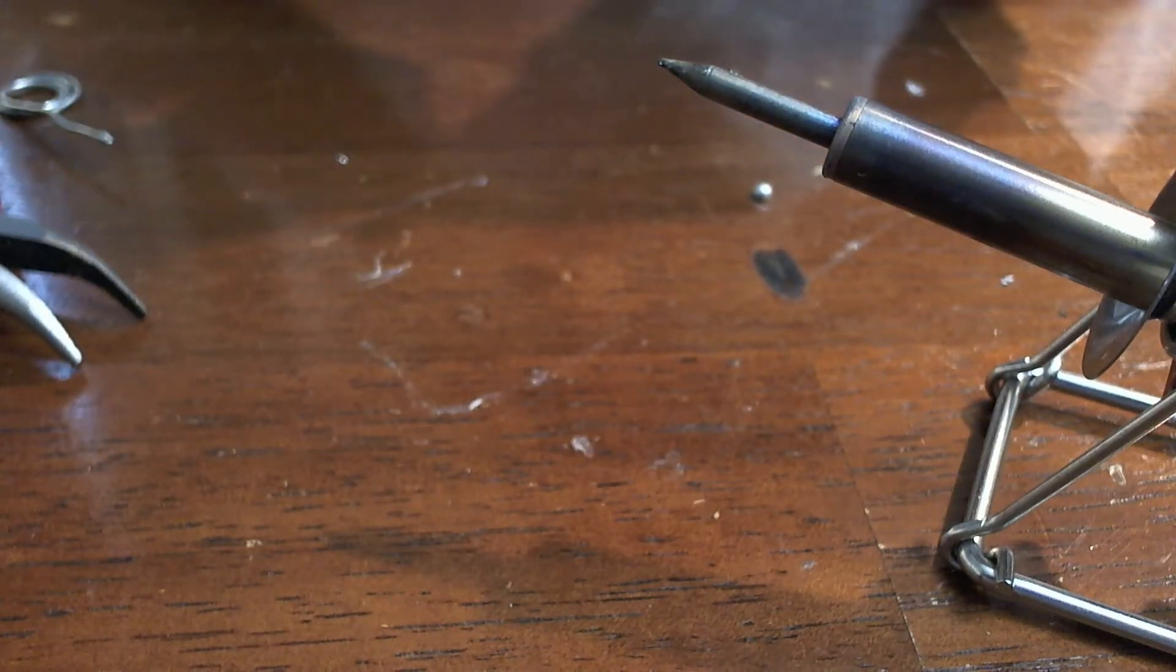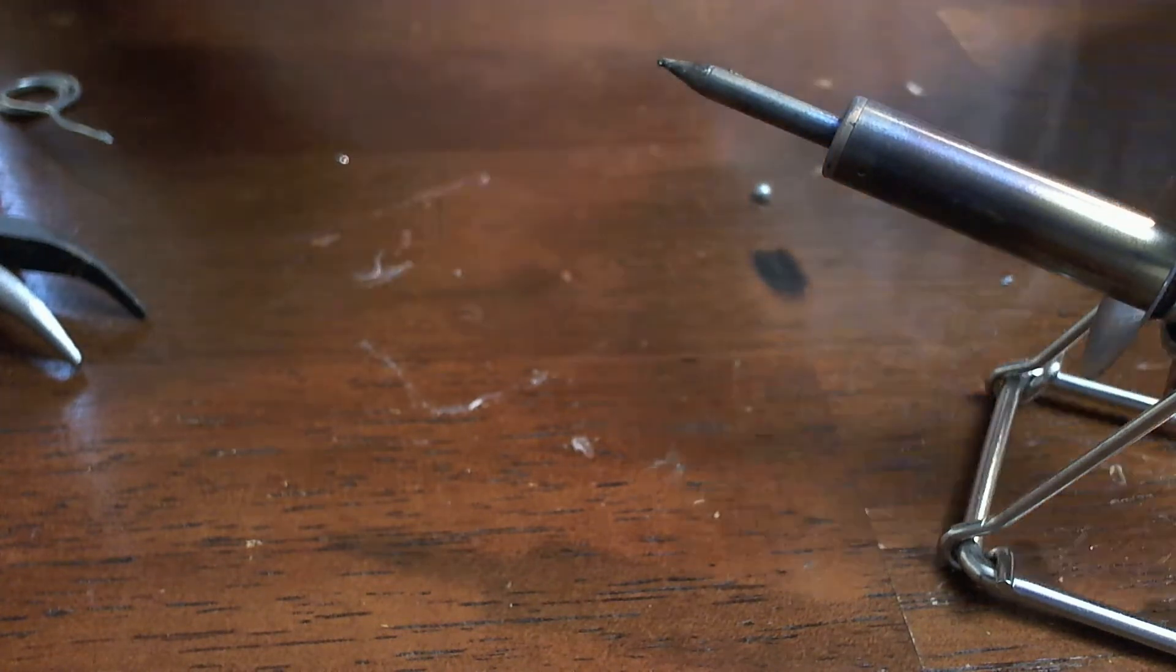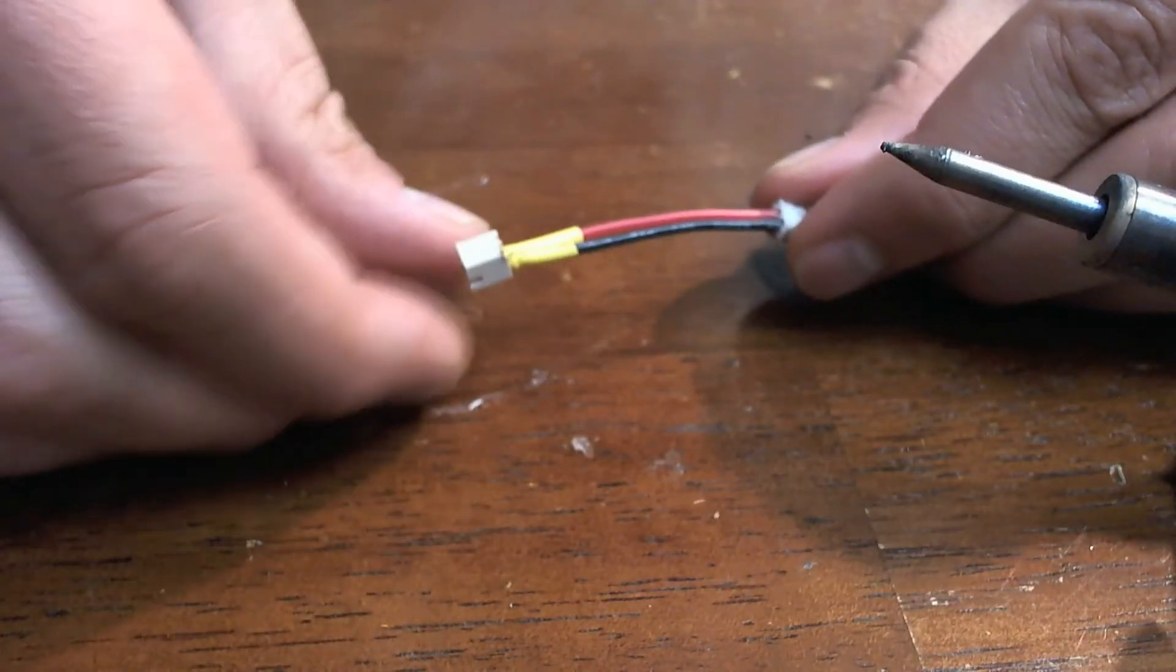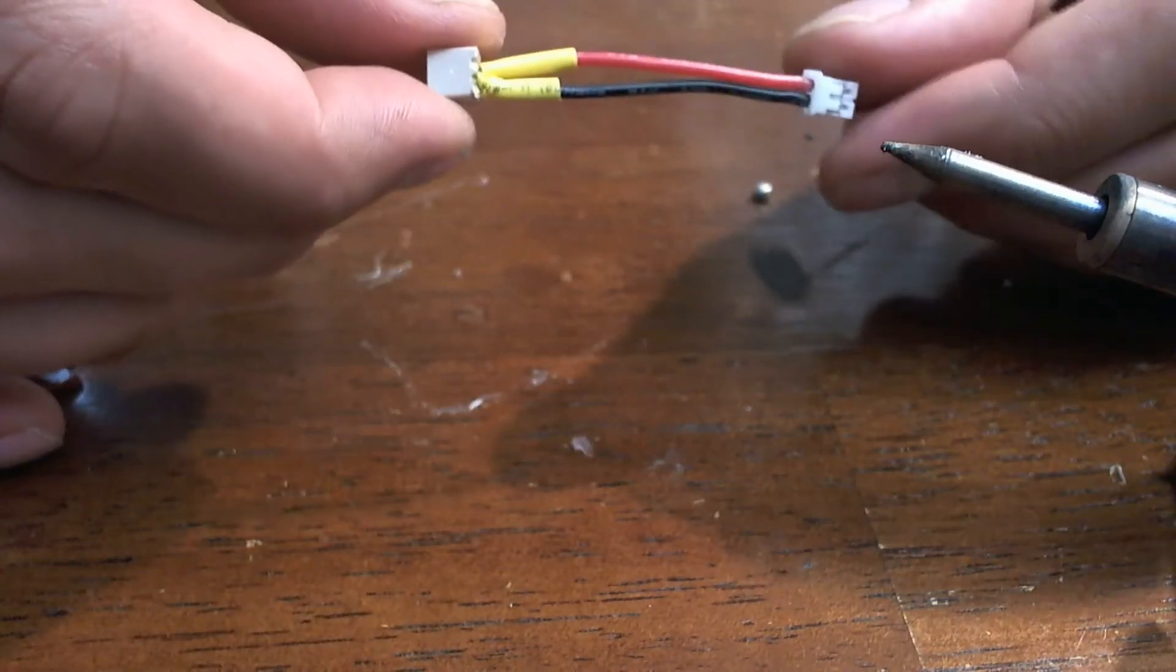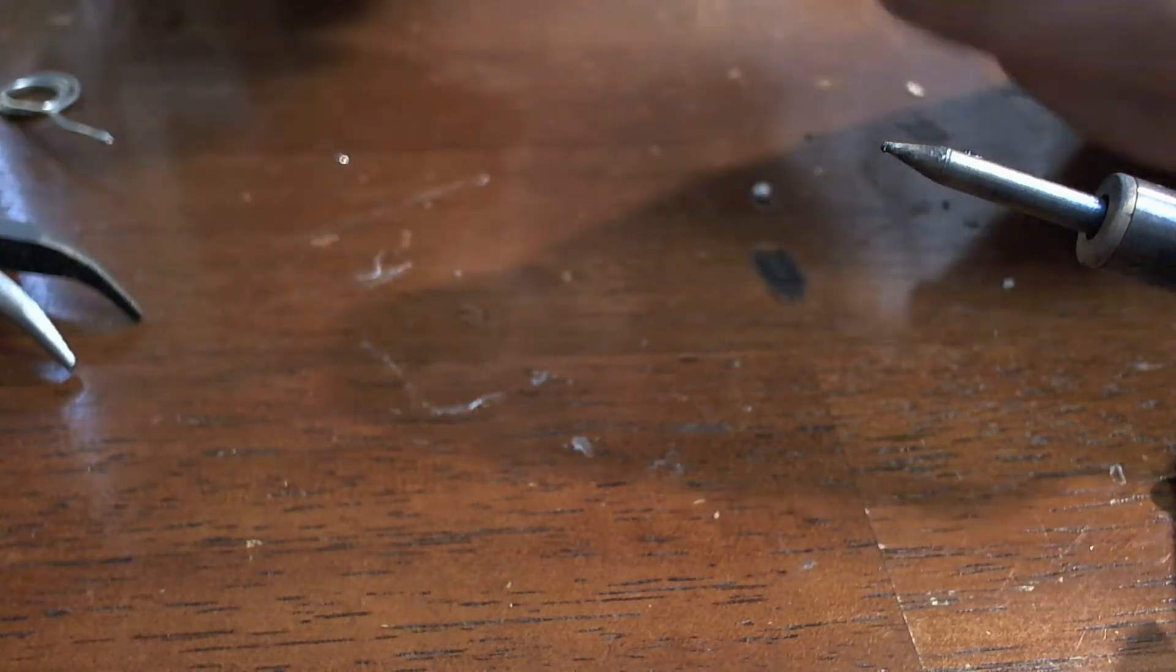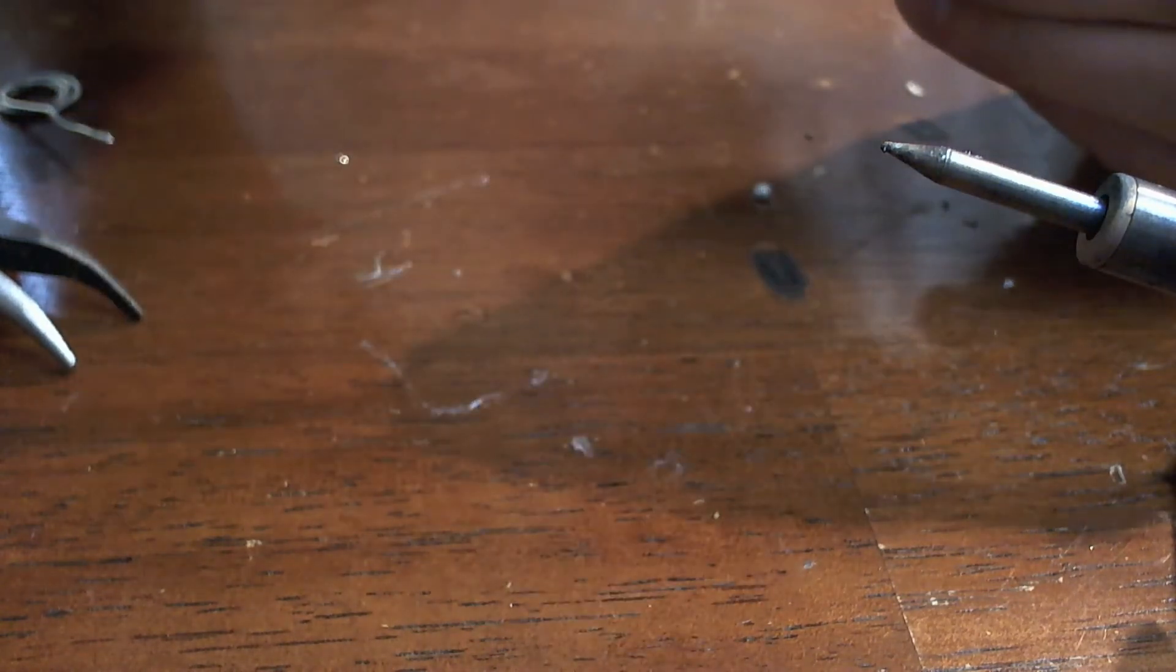Now we'll slide our heat shrink tubing over this here. We'll just hit it with the iron. There we go.